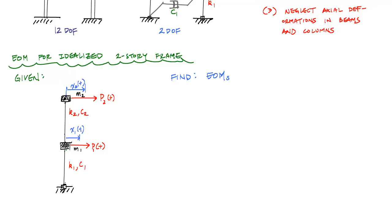So now, what we want to do is determine the equations of motion, assuming that we're given the masses, the stiffnesses, the dampings for each floor, and then the forcing functions that are applied to each floor. And we want to find the equations of motion.